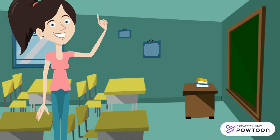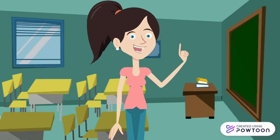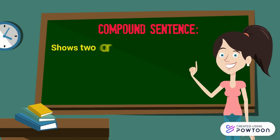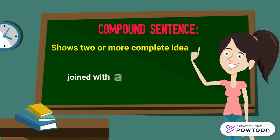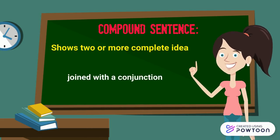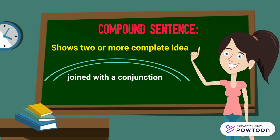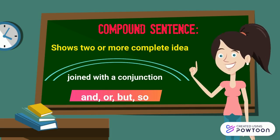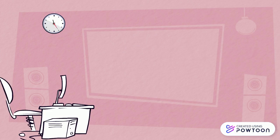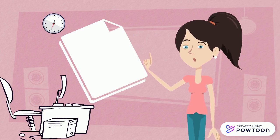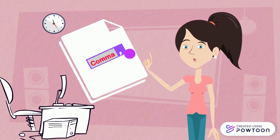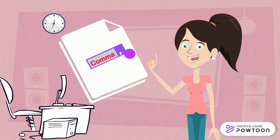As for the compound sentence, it's a bit different. A compound sentence is made when two or more simple sentences are joined together with a coordinating conjunction. A conjunction is like a bridge that connects two sentences, like and, or, but, and so. Remember to add a comma before the coordinating conjunction when joining two simple sentences in order to form a compound sentence.